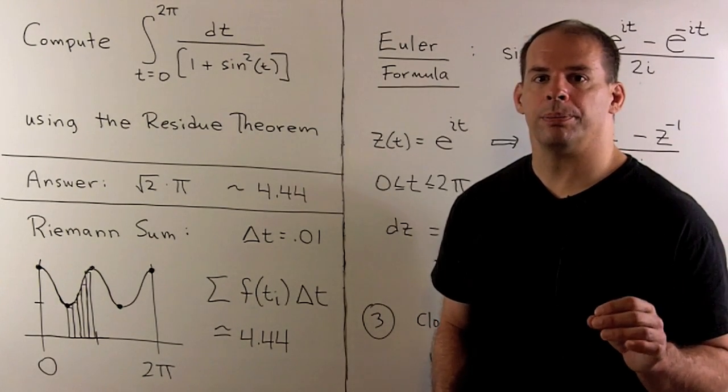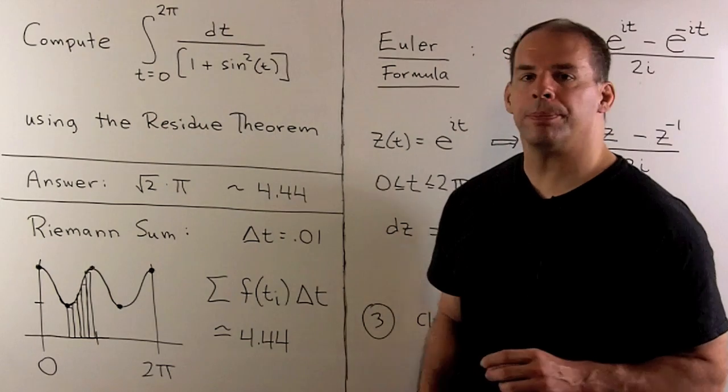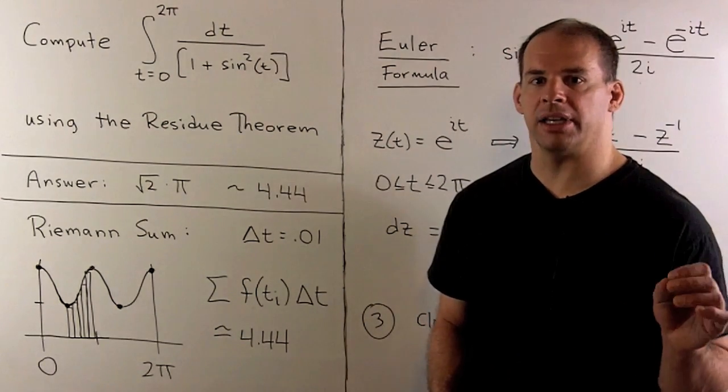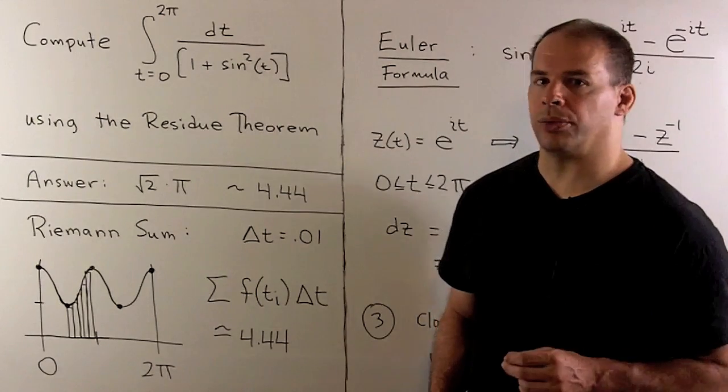Let's compute the definite integral from 0 to 2π of 1 over 1 plus sine squared t with respect to t, using the residue theorem.